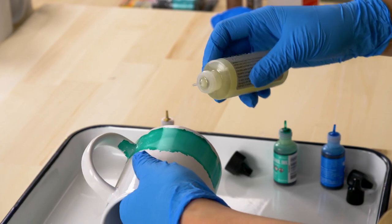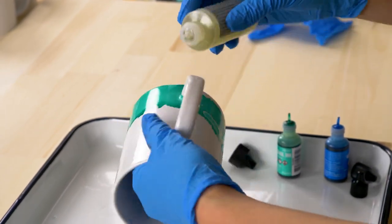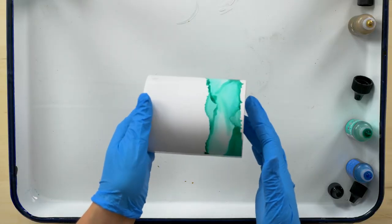Using the same hand tumbling method, use a little bit of the alcohol ink blending solution to thin out the color.